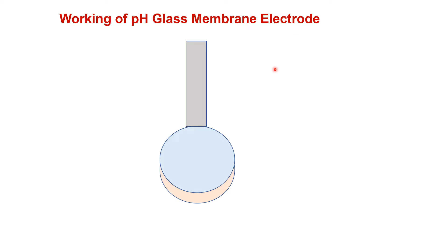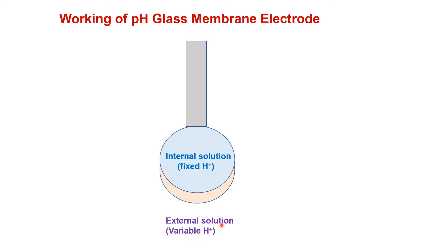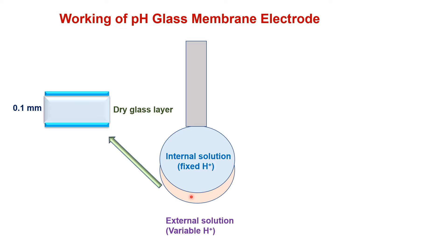The working of the pH glass membrane electrode: the pH value of the solution is related to the hydrogen ion ratio inside the probe and the solution being tested. The internal solution has a fixed hydrogen ion concentration, while the external solution has a variable hydrogen ion concentration. The sensitive area of the pH probe has three regions. The first is the dry glass layer, with thickness 0.1 mm or 10⁵ nm, which has no exchangeable sites for sodium or hydrogen ions — it has fixed sodium ions.